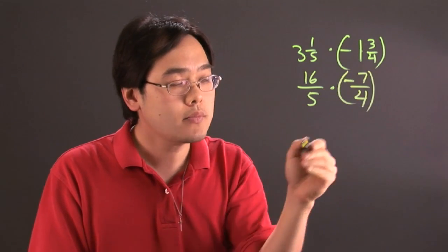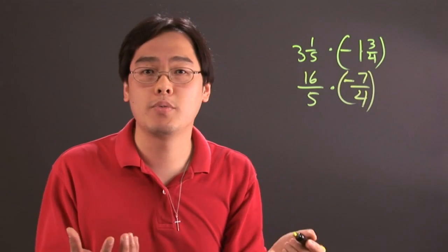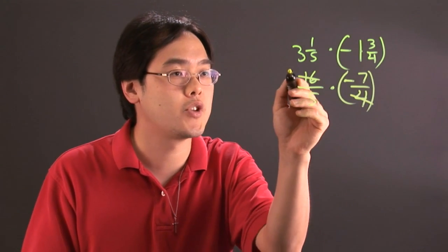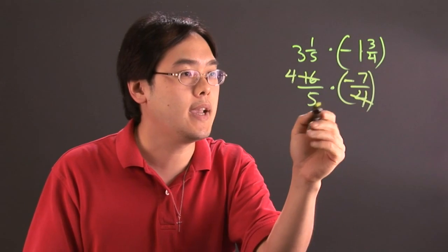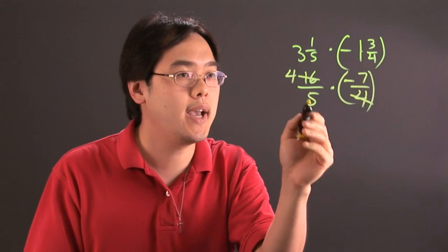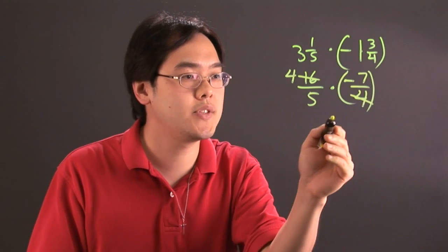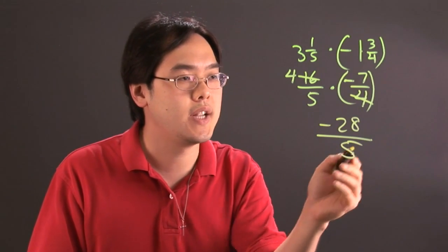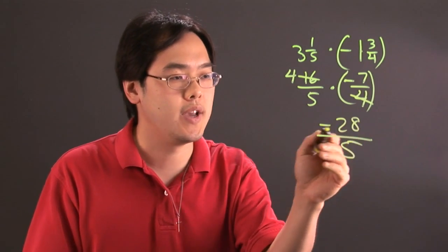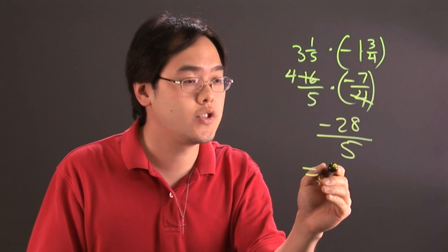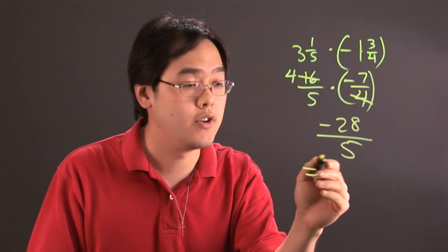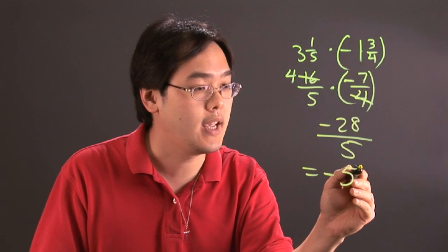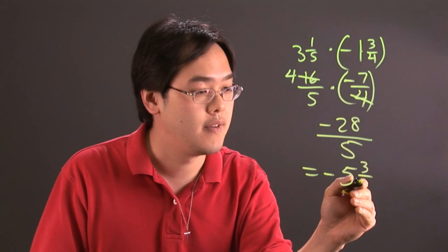At this point, you multiply and simplify. As you can tell, 16 and 4 reduces — there's going to be a 4 left over, and the 7 does not reduce with the 5. So you multiply 4 times negative 7, which is negative 28, and the 5 stays where it is. You have negative 28/5, and you can convert this to a mixed number: negative 5 and 3/5.